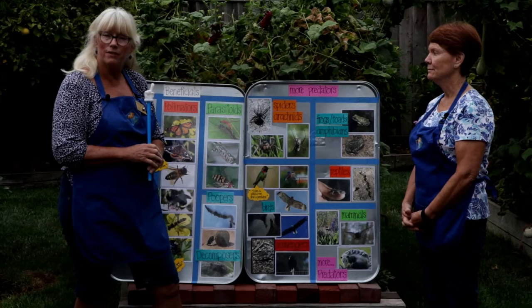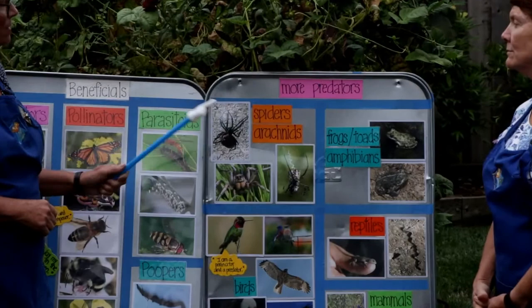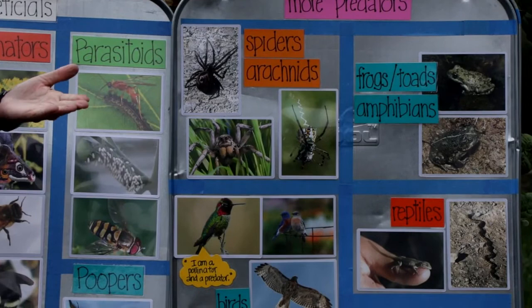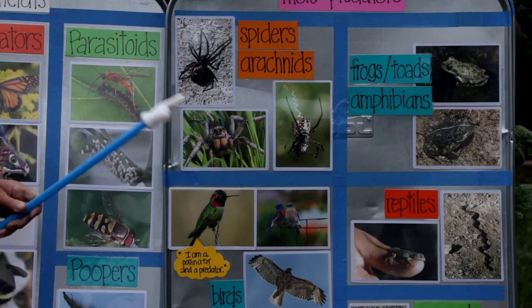We've talked about the four good P's of beneficial insects, but there are more predators and critters that help control pests. In our first category we have spiders — the fancy name is arachnids. Spiders can be classified differently from insects very easily by counting legs: all insects have six legs, while all spiders have eight legs. There are many different kinds of spiders and they trap and kill insects in different ways.